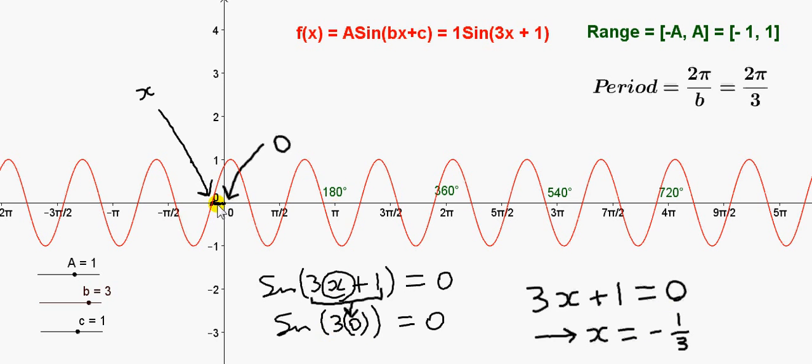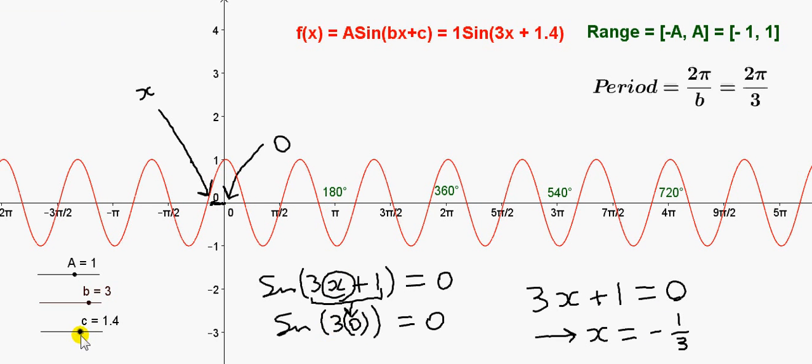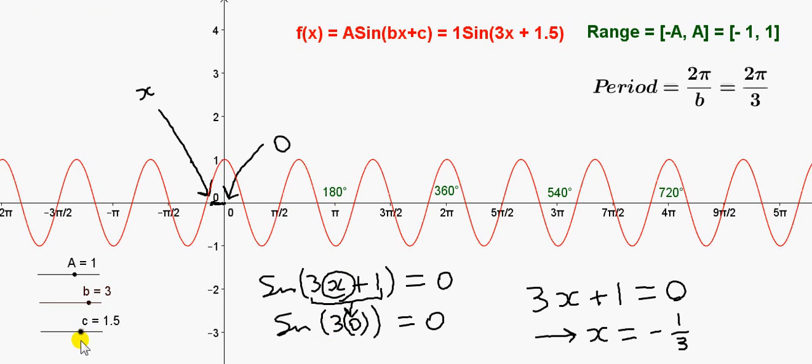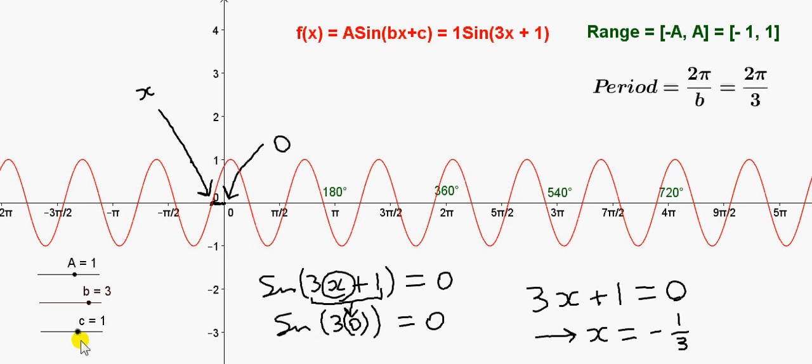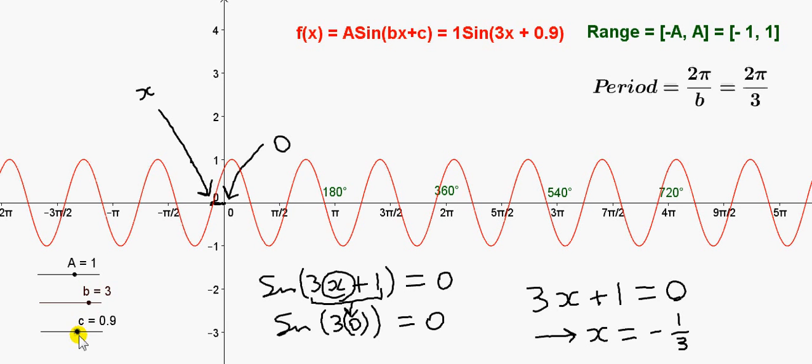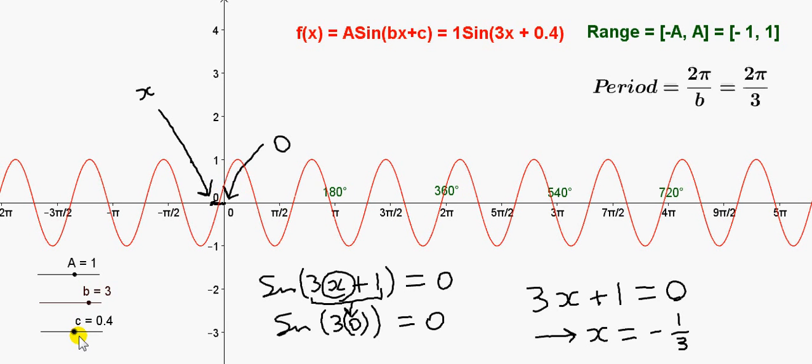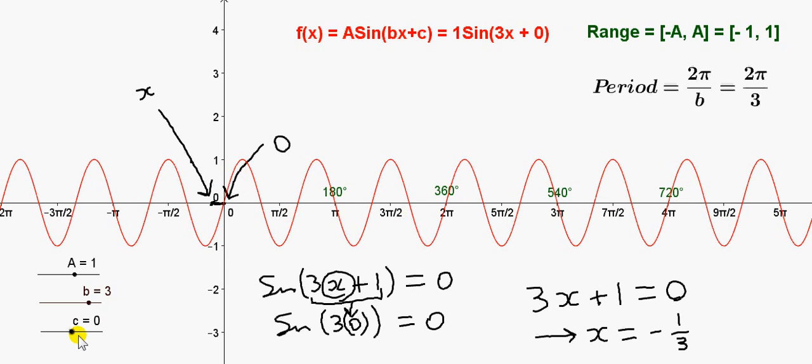So let's see that again. So we move 1 third of a radian. Let's go back here to 1. And if I change c to 0, we shift this 1 third of a radian to the right.